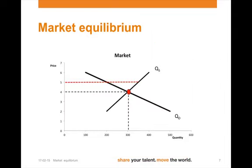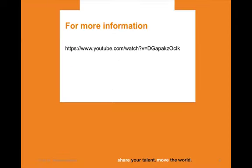We can also show this in a diagram. The red dotted line at a price of 5 shows the surplus of quantity supplied. As prices decrease, quantity demanded will increase. This is shown by a movement along the demand curve towards the equilibrium. Supply, on the other hand, will also move along the curve — quantity supplied will fall. Eventually, forces will settle in market equilibrium.